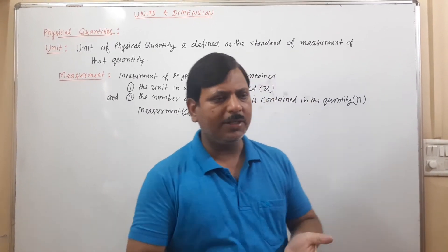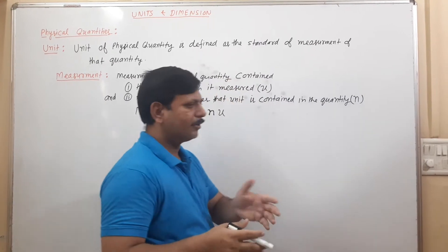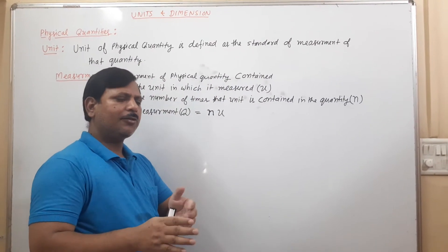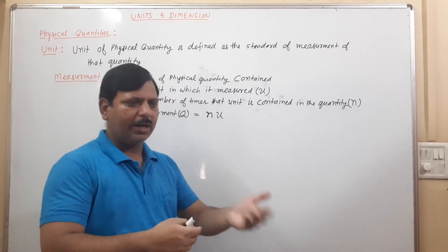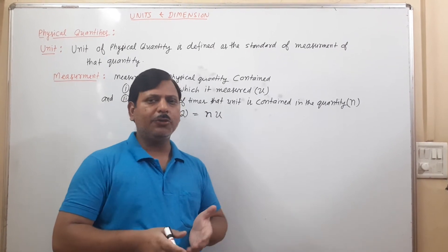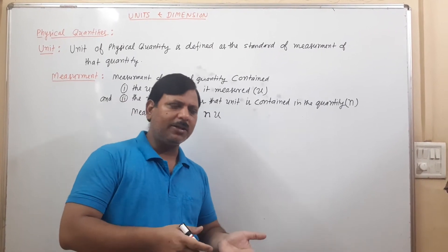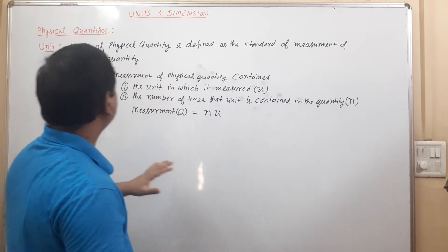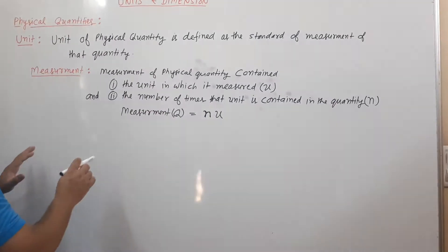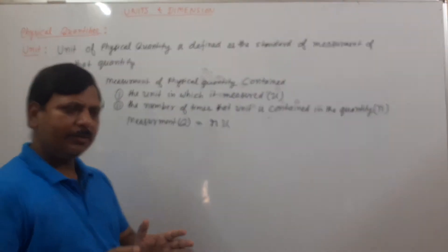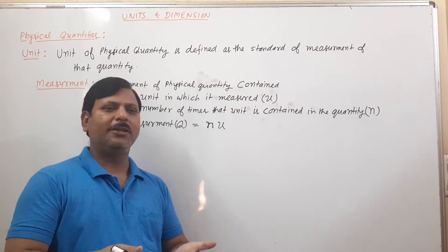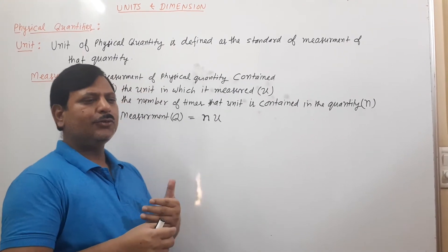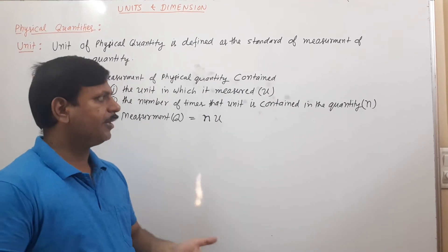We will discuss those things today. Physical quantities are divided into two parts: fundamental quantities and derived quantities. Physical quantities are those quantities which can be measured and in terms of which we can express the laws of physics.